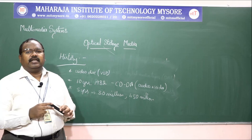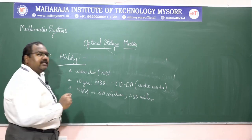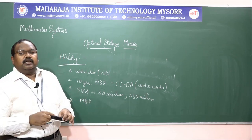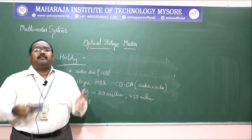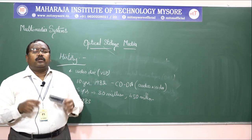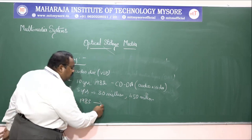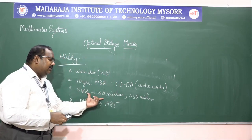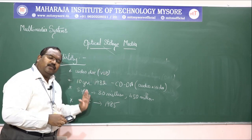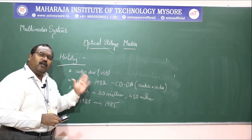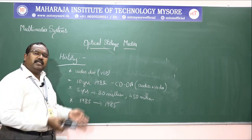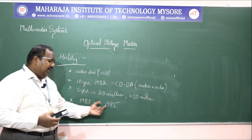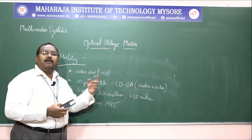With respect to the extension of CDDA, the extension was announced in 1983, stating they would extend the architecture of CDDA. That architecture was mainly revealed in 1985 and given to the public. Though it was revealed later, CDDA was already gaining popularity. People started using CDDA to store their audio and music, and even started buying players. In 1983 the extended architecture was announced, and in 1985 it was given to the public.